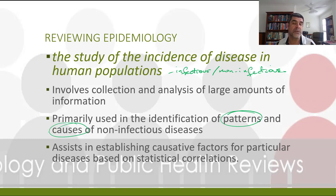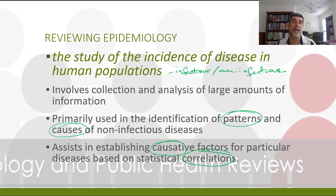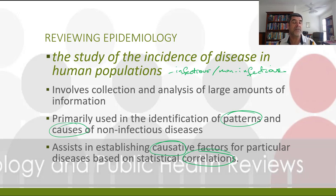Epidemiological studies also assist in establishing causative factors for particular diseases, and causation is linked to statistical correlation. We know these two terms are not interchangeable — something that correlates two variables does not necessarily indicate cause and effect. That is part of why we do multi-stage epidemiological studies: initial descriptive studies, then analytical and sometimes interpretive studies, to see whether the factors we've isolated as potential causes are common.